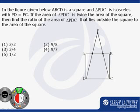The question says ABCD is a square and triangle PDC is an isosceles triangle. That means this side is equal to this side.